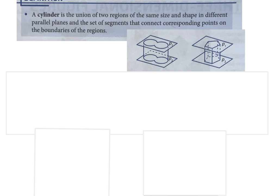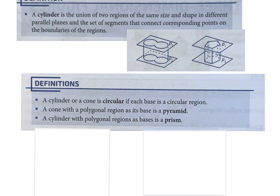A cylinder or cone is called circular if each base is a circular region. When we think of a cone or cylinder, we're thinking of circular ones — that's what we're used to seeing. A cone with a polygon region as its base is called a pyramid. So a cone with a polygonal base is what you're used to thinking of as a pyramid.